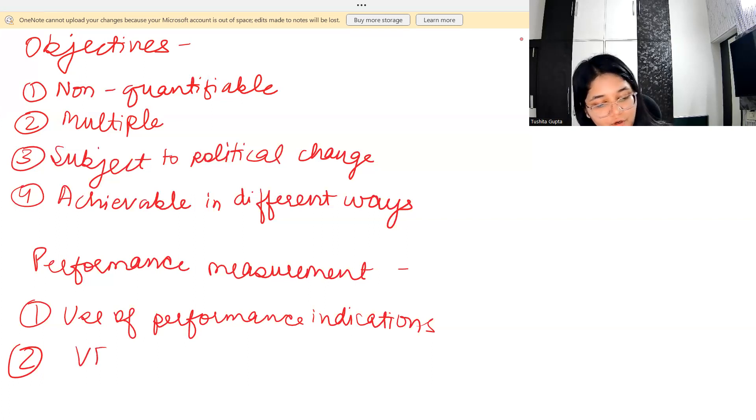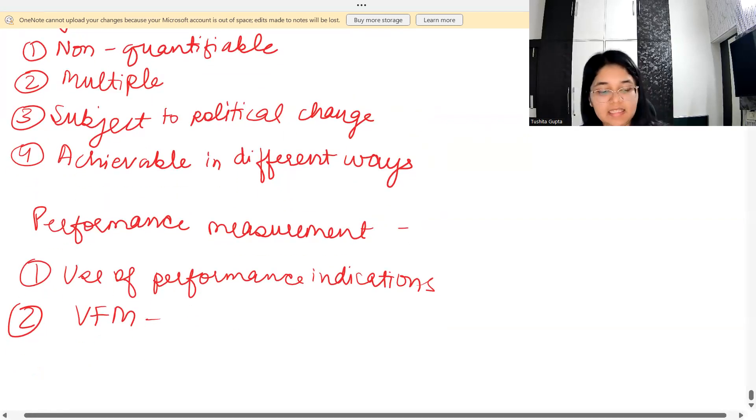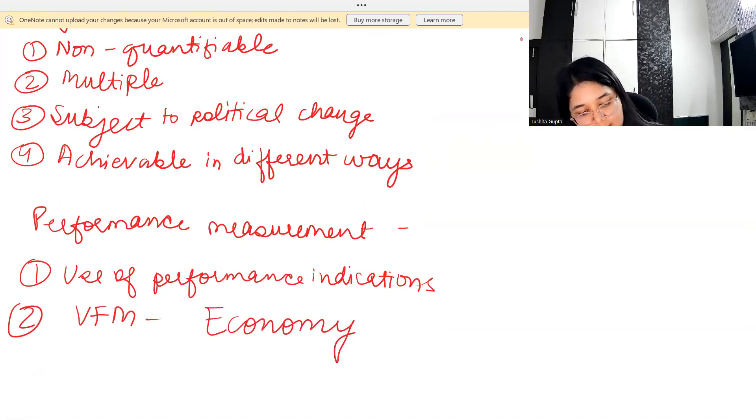Another very useful model is VFM - Value for Money. Here we check the three E's: the first E is Economy, the second E is Effectiveness, and the third E is Efficiency.